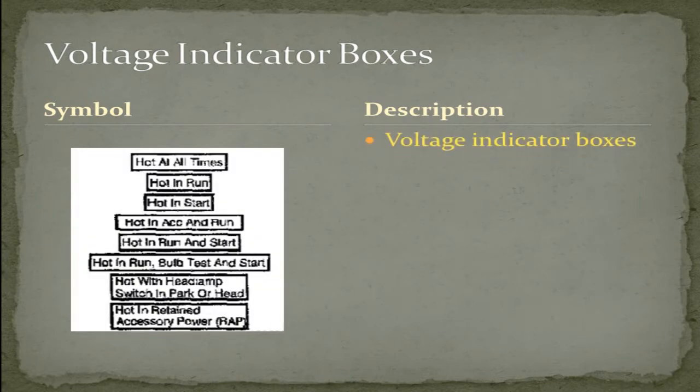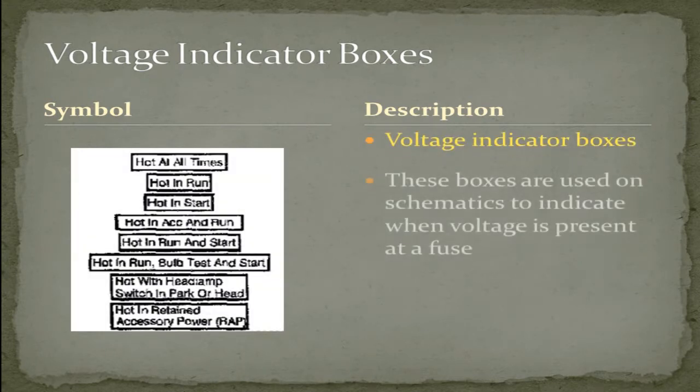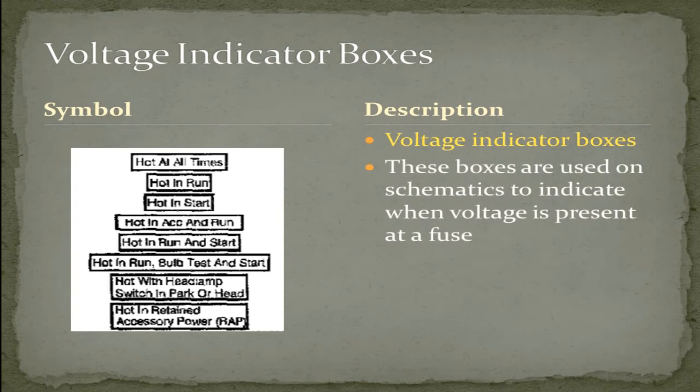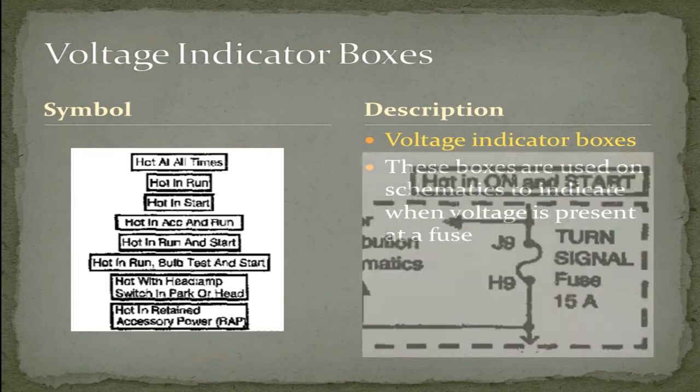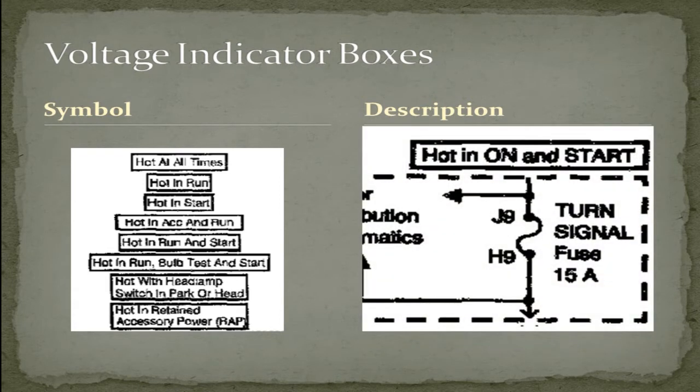Voltage indicator boxes. These boxes are used on schematics to indicate when voltage is present at a fuse. As illustrated here with this 15 amp turn signal fuse. This fuse is hot in on and start position of the ignition switch.